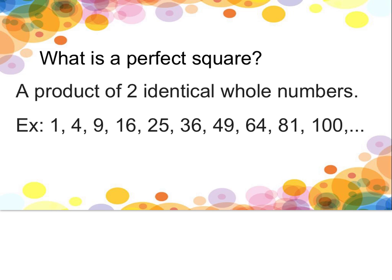It's also important to understand what a perfect square is. A perfect square means that it's a product of two identical whole numbers. So when finding the square root of a perfect square, I will get a whole number.